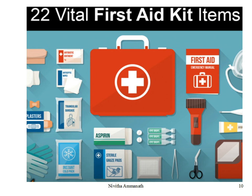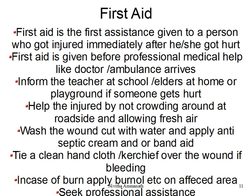What is first aid? When you get hurt, what you do first is first aid. A first aid kit contains items like band-aids, antiseptic cream, an instant cold pack, sterile gauze, small scissors, tweezers, and tablets. You will find a first aid kit at home, at the office, or in school. First aid is the first assistance given to a person who got injured, immediately after getting hurt — before professional medical help like a doctor or ambulance arrives.